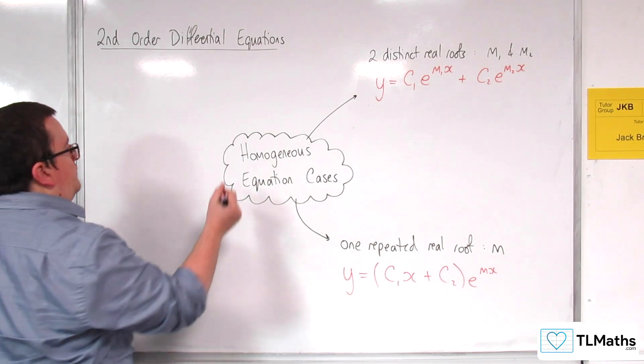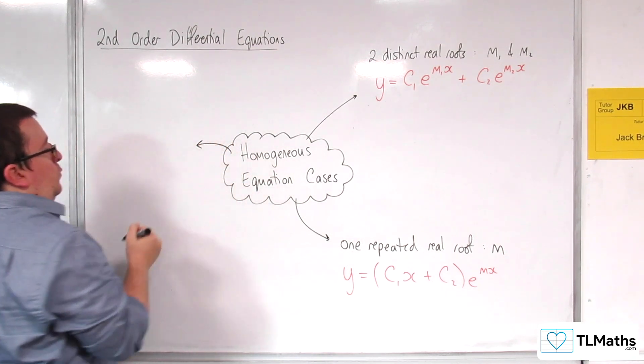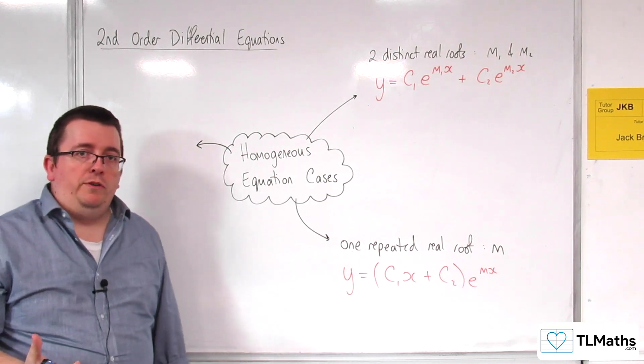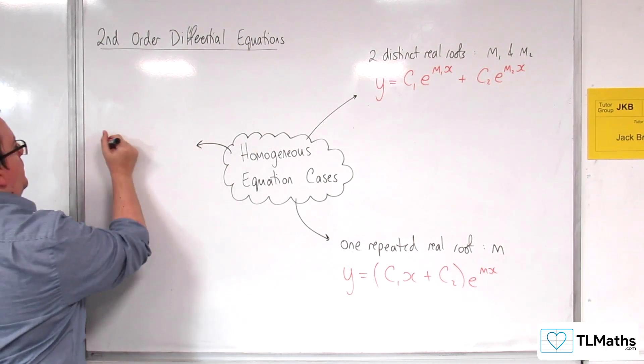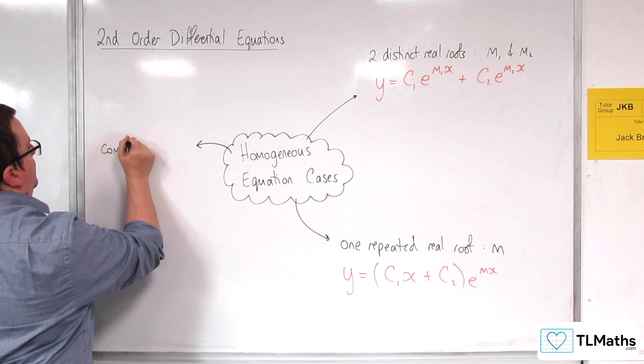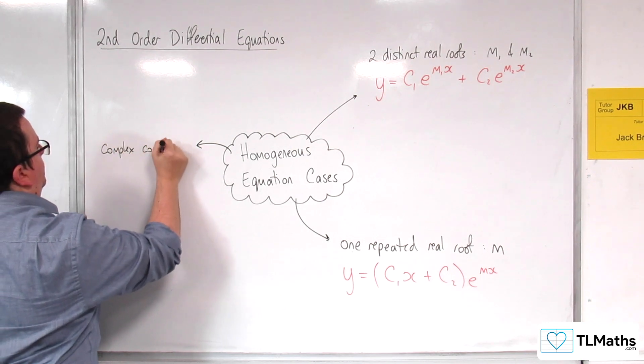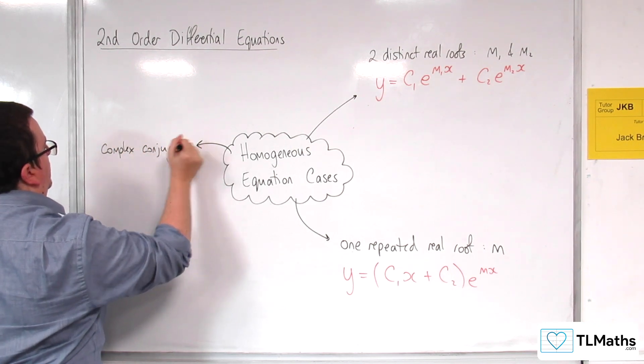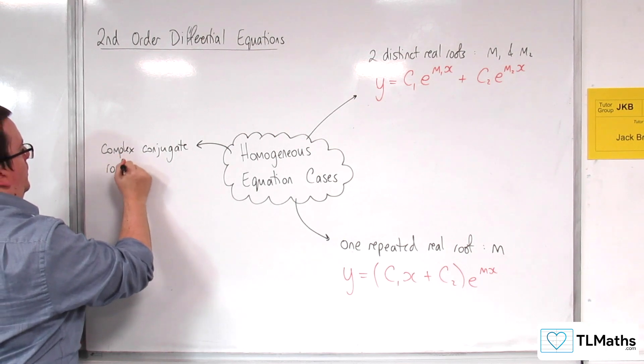If, on the other hand, we get complex roots, so complex conjugate roots.